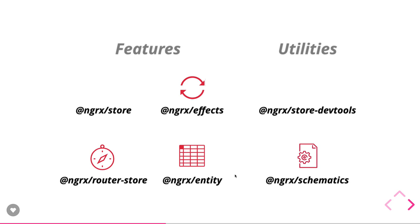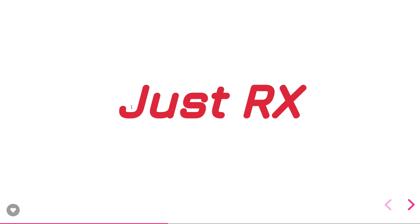NgRx has different modules: Store, Effects, Entity, Router, and DevTools — similar to what Redux DevTools provides. Effects handle API calls because Redux is a pure synchronous library. To handle asynchronous events like API calls, web socket events, or any async event, we use NgRx Effects. Once the async event completes, we fetch the data and update the state. The Store library combines all the reducers into one single store object.